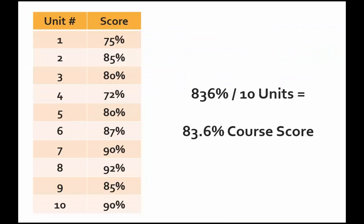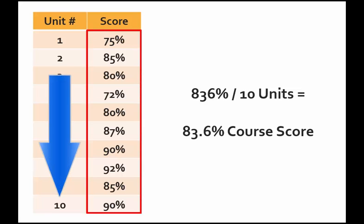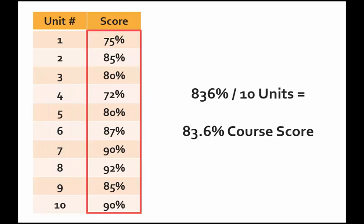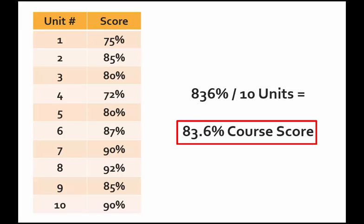Last, let's discuss how course grades are calculated. To calculate the course score roll-up, you need to look at the unit scores and the number of units in the course. Let's take a simple example of a course with 10 units. Once you have each unit score, add them up and divide by the number of units. The sum for the units in this course is 836. Dividing by 10 gives 83.6%. The overall course score is 83.6%.